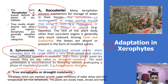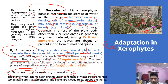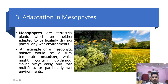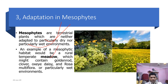The third category is true xerophytes. They can tolerate water stress and require less quantity of water for a long time. They include trees, herbs, and shrubs. Mesophytes are terrestrial plants which are neither adapted to particularly dry nor particularly wet environments — they are mesophytic plants requiring a medium quantity of water.